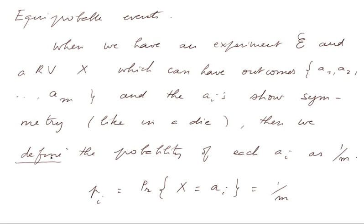the probability of each outcome X equals 1 over M. So they add up to 1. We denote PI the probability of Ai, written as: the probability that X equals Ai is equal to 1 over M. That's the case of equiprobable events, these being the outcomes and in this particular presentation, the events.